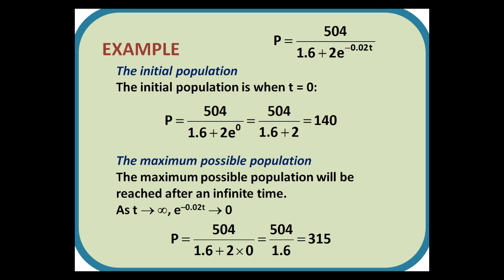The maximum possible population will be reached after an infinite time. As t tends towards infinity, e^(-∞) tends towards 0. Hence P = 504/1.6, which is 315.